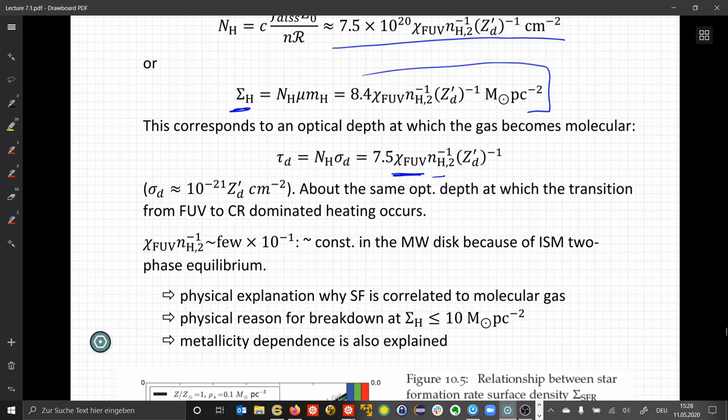It gives a physical reason for the breakdown at smaller surface densities, because then we don't have sufficient column depth. And the metallicity dependence is also explained, because the metallicity alters the shielding capabilities of the gas.